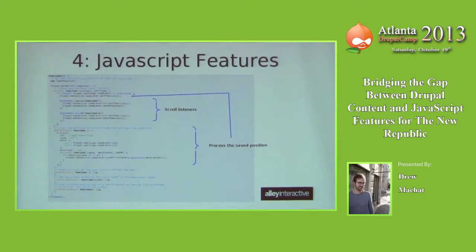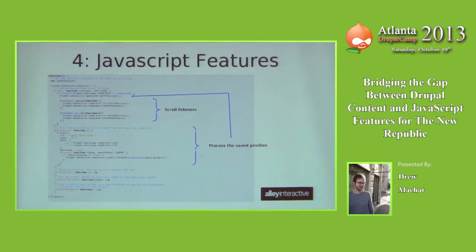This kind of setup really enabled us to build out some of the special things New Republic asked us for without too much overhead, without trying to shoehorn a contrib module into doing something it wasn't designed for. Whenever you need to add some custom functionality to your JavaScript — if you need to add some reaction on the page — you can use drupal_add_js to expose those elements to your DOM.